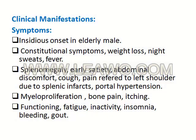Clinical manifestations and symptoms: insidious onset in an elderly male is very important. Constitutional symptoms dominate the clinical picture, such as weight loss, night sweats, and fever. Splenomegaly is common and can become massive, causing early satiety, abdominal discomfort, cough, and pain referred to the left shoulder due to splenic infarcts and portal hypertension. Myelofibrosis can cause bone pain and itching. Cytopenias due to reduction of blood cells may manifest as fatigue, inactivity, insomnia, or bleeding.